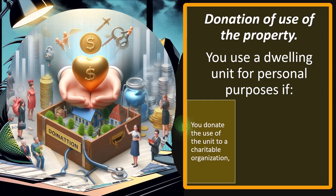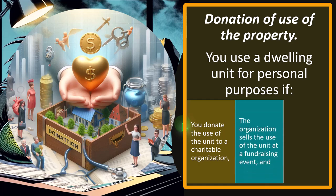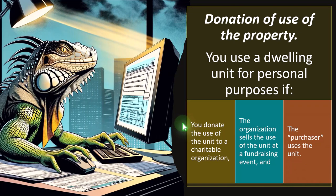If you're donating the property's use, you might think you can deduct it on Schedule A as a charitable deduction. However, if you get a benefit from deducting it as a charitable deduction, you wouldn't get a double benefit — using it for personal/charitable purposes and also claiming rental property deductions. If the organization sells the use of the unit at a fundraising event and the purchaser uses the unit, that applies here.